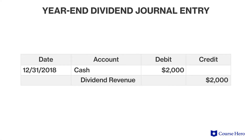The year-end dividend would be recognized as well. Since the $20,000 was paid to all investors and Lucky Corporation is a 10% investor, Lucky Corporation is entitled to 10% of the total dividend, which is $2,000.